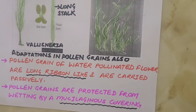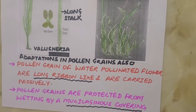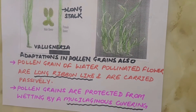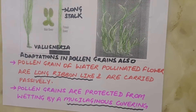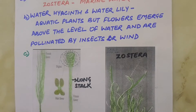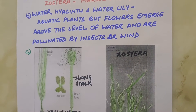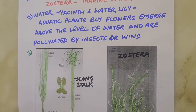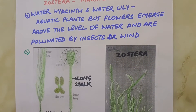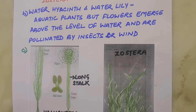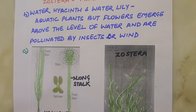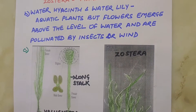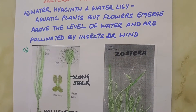Both wind and water-pollinated flowers are not very colorful and do not produce nectar. Flowers are colorful and produce nectar to attract insects like butterflies, house flies, etc. for pollination. But in wind- and water-pollinated flowers, there is no need for these agents, so there is no need for such characters.